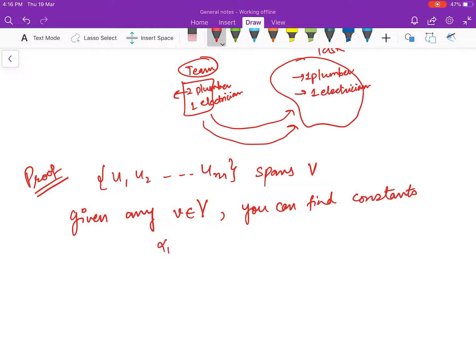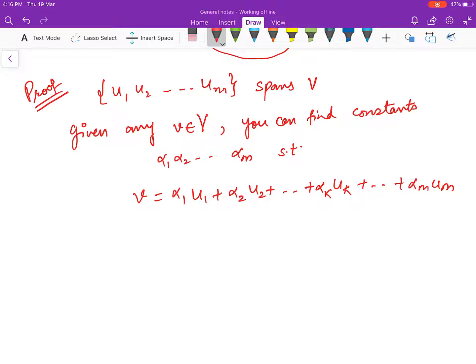Alpha_1, alpha_2, ..., alpha_m such that v equals alpha_1 u1 plus alpha_2 u2 plus alpha_k uk plus ... plus alpha_m um. This is quite general. And now since uk...